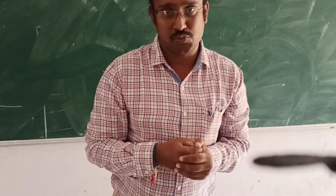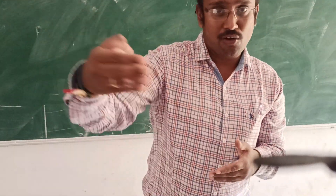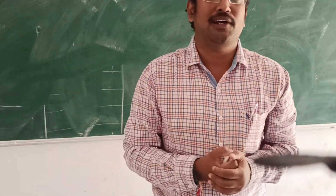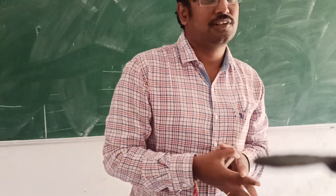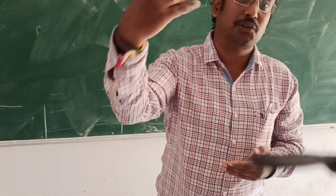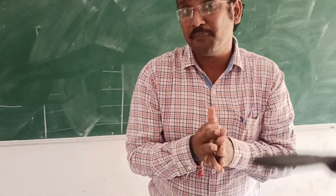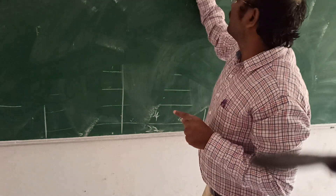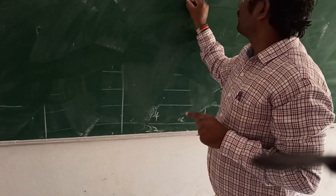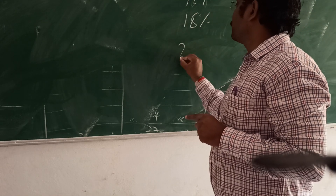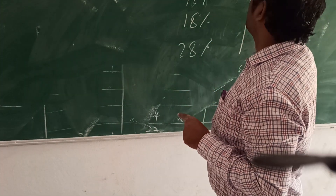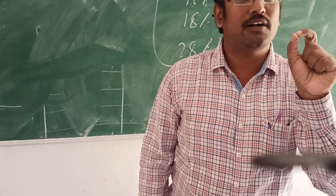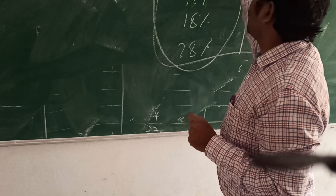GST is an indirect tax where the incidence and impact lie on different persons. The GST rate is not charged on certain commodities. The different rates of GST are: nil rate (zero percent), 5 percent, 12 percent, 18 percent, and 28 percent. These rates are not applicable on such commodities — they are called as commodities kept outside the GST.